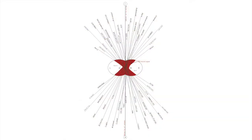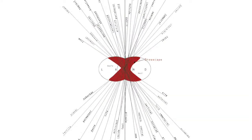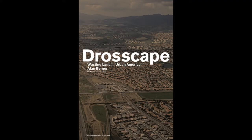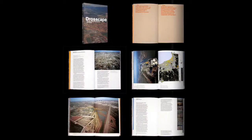Waste in the urban landscape emerges out of an amalgamated zone of that which is considered vast and that which is waste. Drosscape: Wasting Land in Urban America is a guide to this vast, hitherto largely ignored, field of landscape waste. Coined in 2006 by Alan Berger, the term Drosscape has since become popularized in broad professional disciplines.